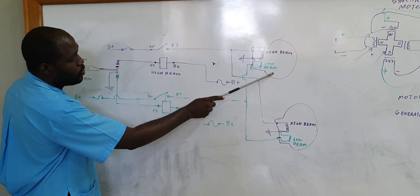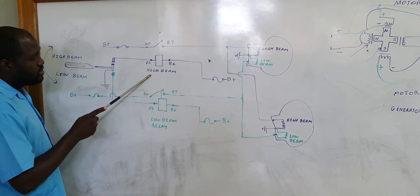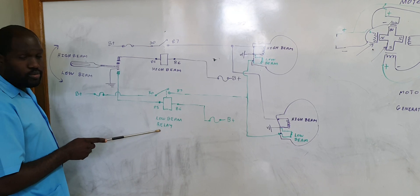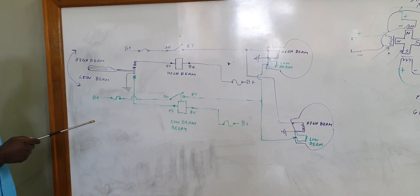So here we have the switch, here we have a high beam and a low beam headlamp bulb, here we have a high beam and a low beam relay. These circuits is what we call a compound circuit.